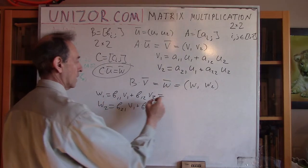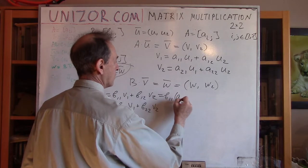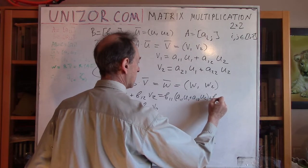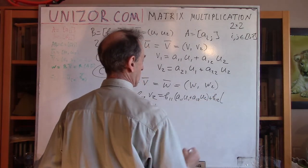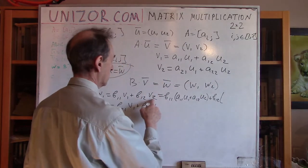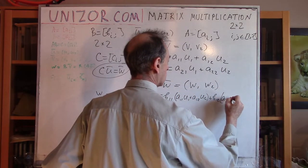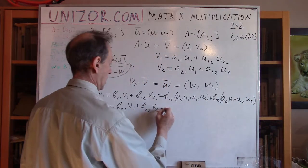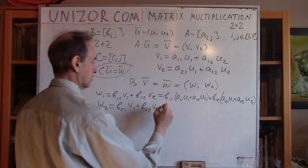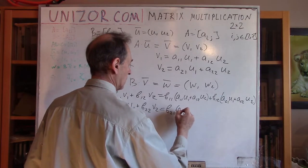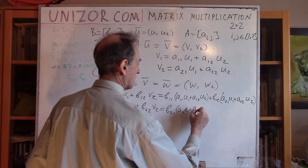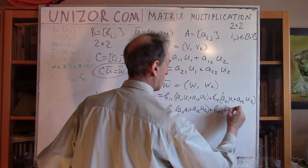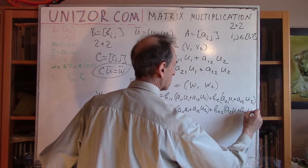Instead of V1 and V2, we substitute their expressions in terms of U. So W1 = B_11·(A_11·U1 + A_12·U2) + B_12·V2. And W2 = B_21·(A_11·U1 + A_12·U2) + B_22·(A_21·U1 + A_22·U2).